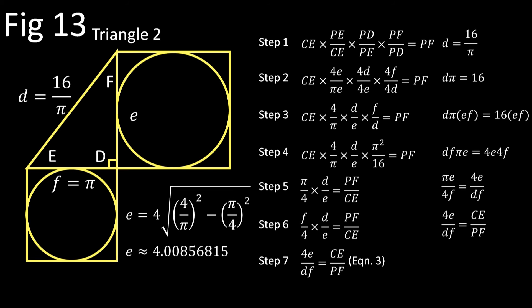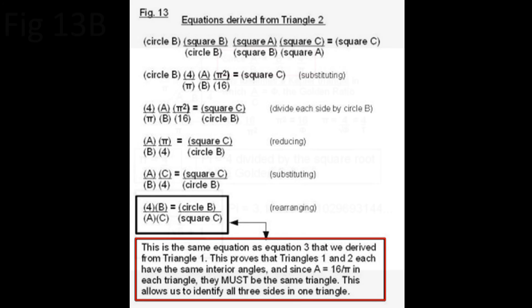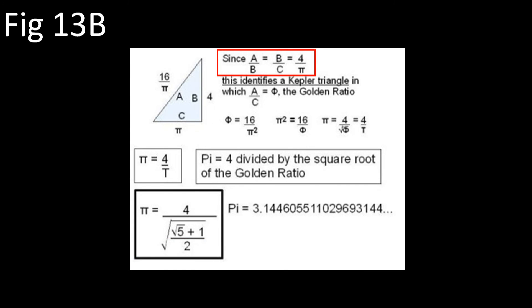Triangle 2 is simply one of many. Yet somehow Wolham concludes that since he could derive Equation 3 from both triangles, then—look, squirrel!—both triangles must have the same interior angles, and therefore they must be congruent. Surprise, surprise! Then for his coup de grâce, Wolham shows that for his hybrid triangle, the ratio of the hypotenuse over the long side equals the ratio of the long side over the short side. And therefore—look, squirrel!—this must be a Kepler triangle, and therefore π must be equal to 4 over the square root of the golden ratio.